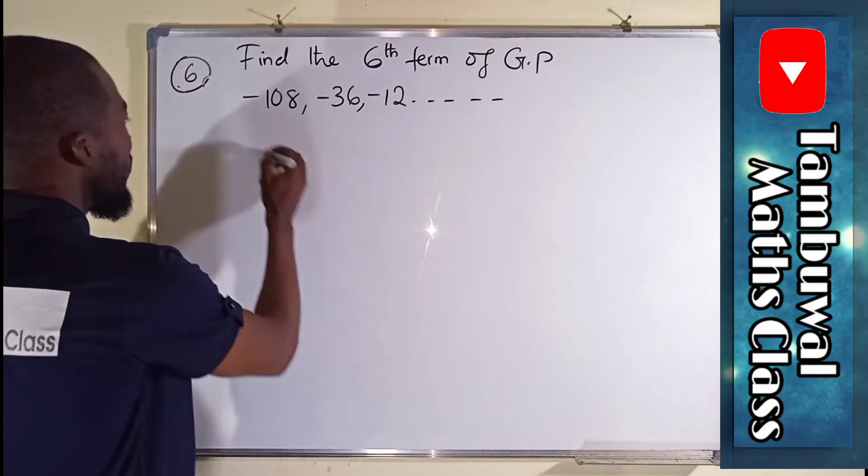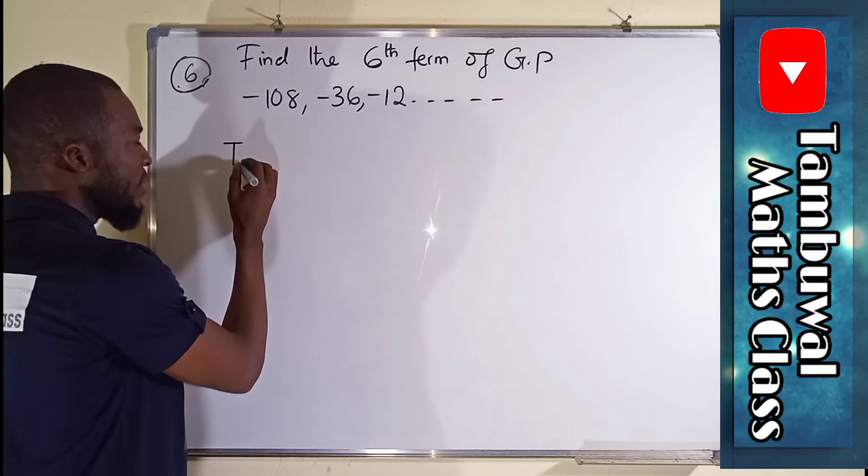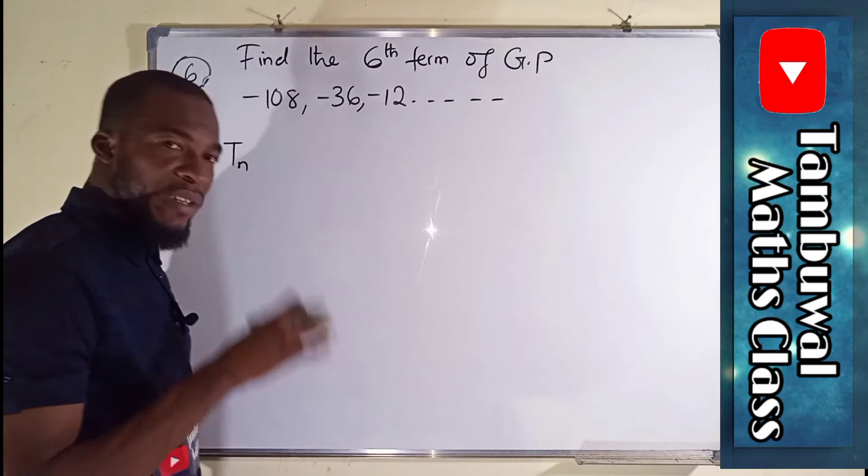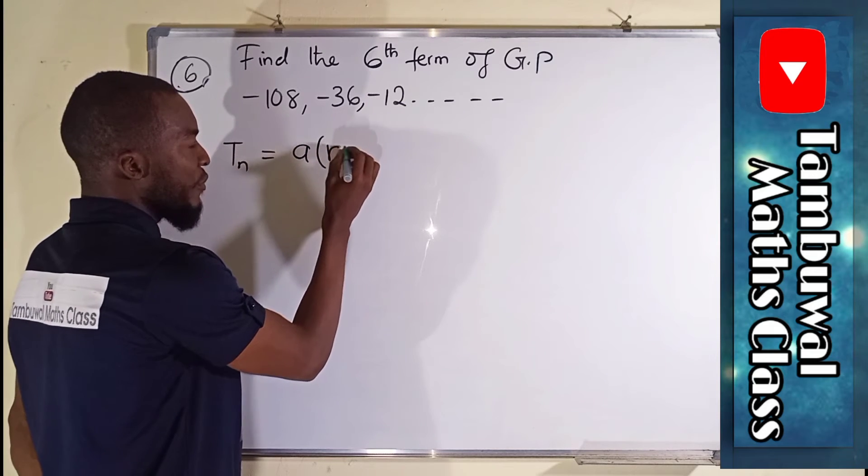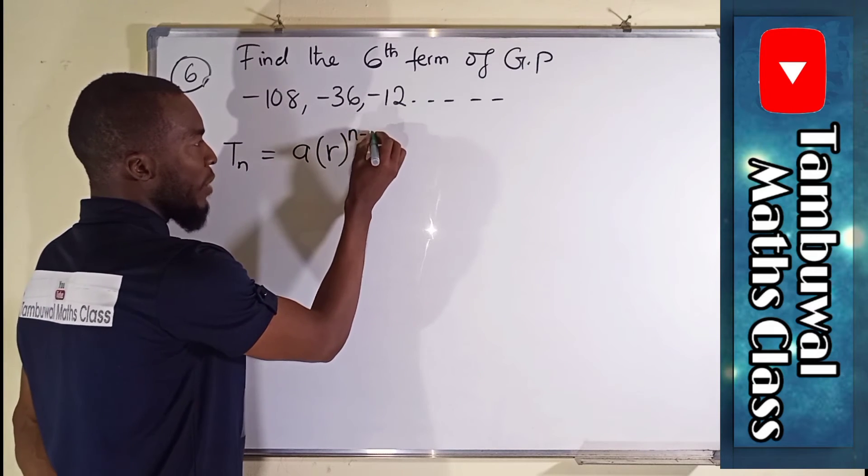Our general formula says every term in GP, Tn, represent every term, is equal to A, R raised to the power of N minus 1.